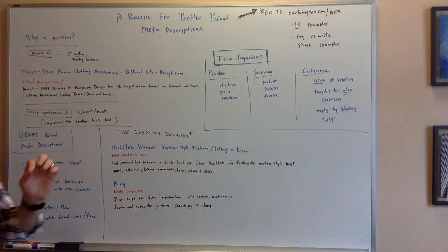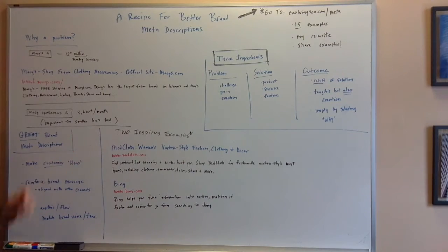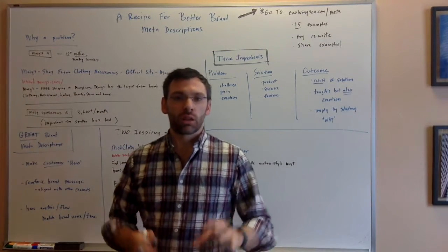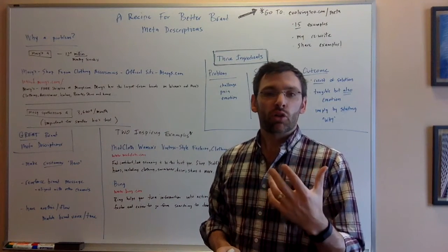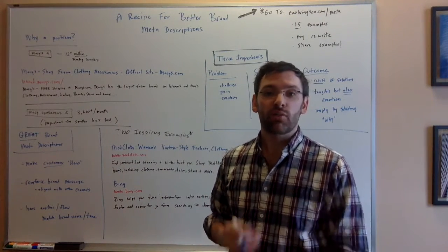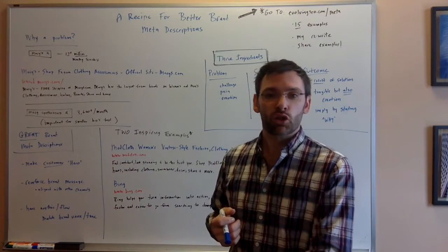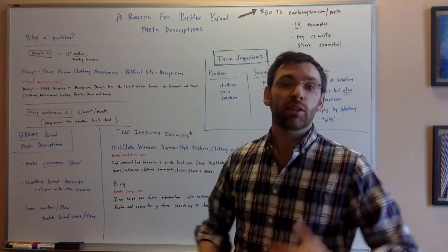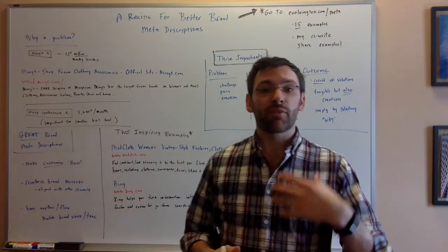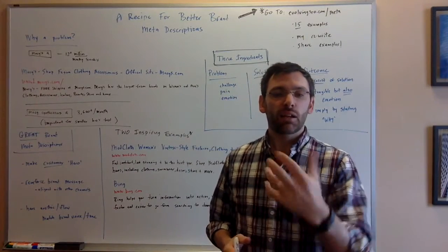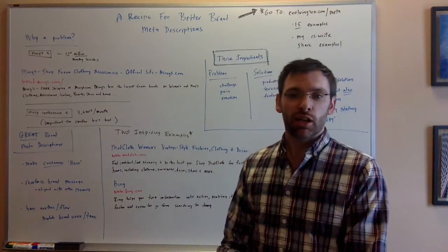Number one, they make the customer the hero. Now you may have heard lately about the so-called hero's journey. It's very common in writing, especially fiction writing. But for example, somebody in my podcast talked about the hero's journey and how to put that into your marketing and your product and everything. This is the number one thing that I believe a great meta description does. It makes the customer the center focus of everything you're talking about in the description.